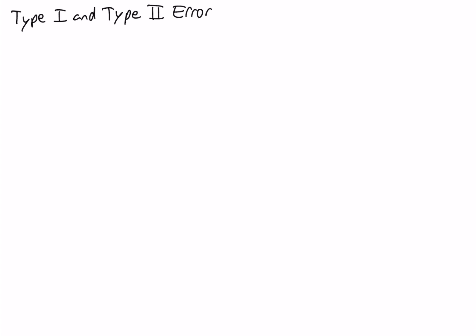Type 1 and type 2 errors. Now in hypothesis testing, we're coming to a conclusion about a population parameter, such as the population mean, using a sample. Now samples are selected randomly, so it's possible that just by random chance we come to the wrong conclusion. So we'll be making an error in our hypothesis test.